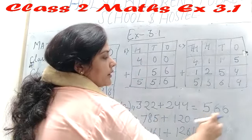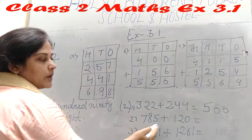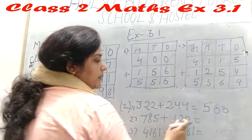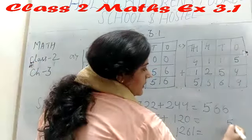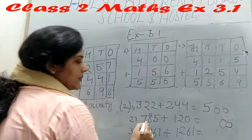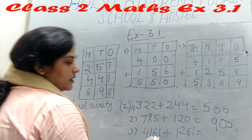Our next numeral is 785 plus 120 equals blank. We can add: 5 plus 0 equals 5. 8 plus 2 equals 10, 1 carry. 7 plus 1 equals 8, plus 1 equals 9.